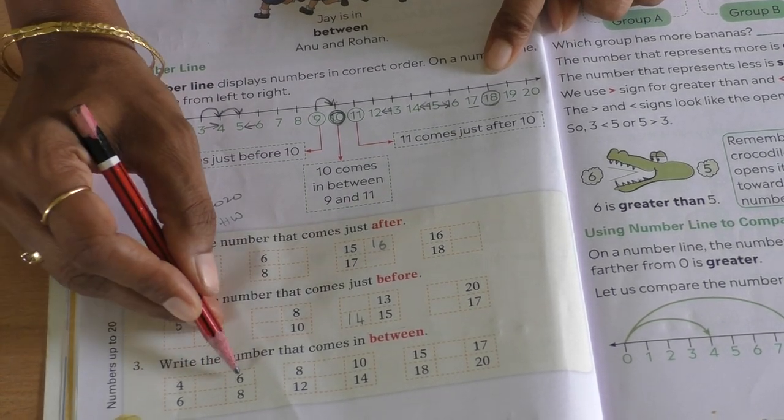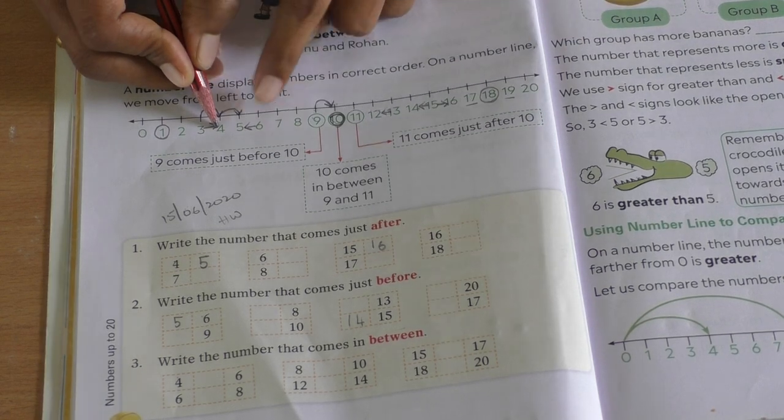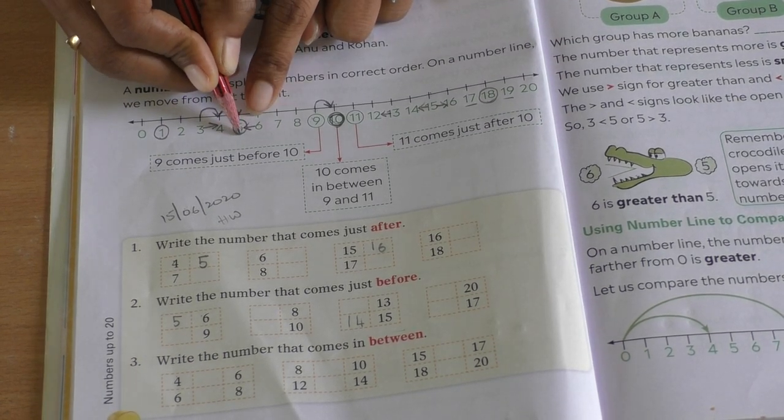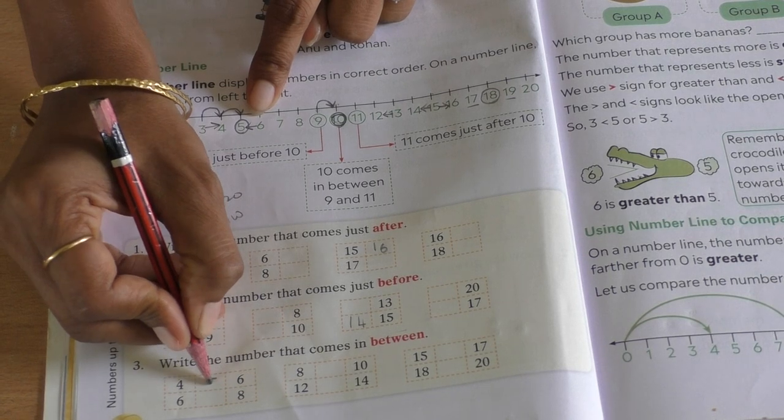So here they have given you 4 and 6. So the number coming in between is 5. So you write here 5.